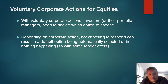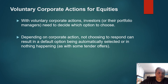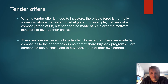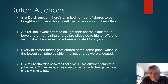Depending on the corporate action, not choosing to respond can result in a default option being automatically selected, or in nothing happening, as with some tender offers. When a tender offer is made to investors, the price offered is normally above the current market price. For example, if shares trade at $8, a tender can be made at $9 to motivate investors to give up their shares. Some tender offers are made by companies to their own shareholders as part of a share buyback program, where companies use excess cash to buy back some of their own shares. Sometimes tender offers are made by a hostile investor looking to take over a company.